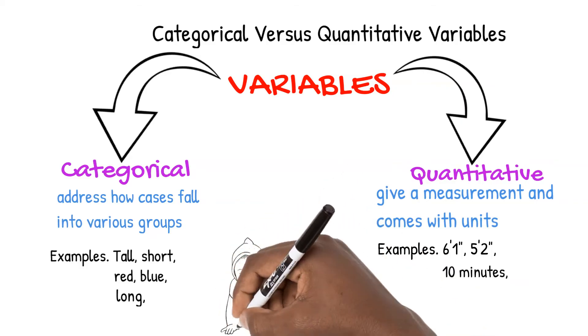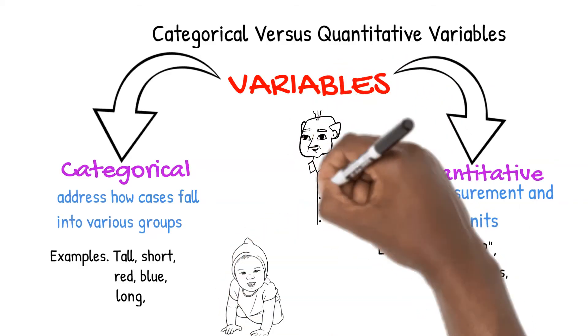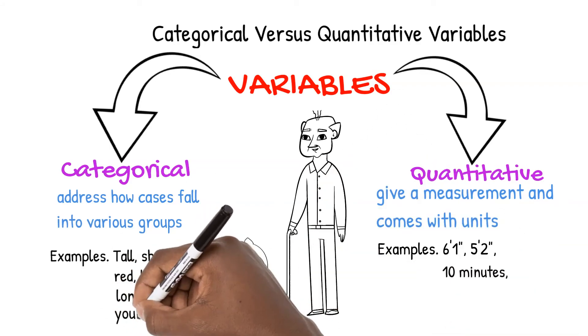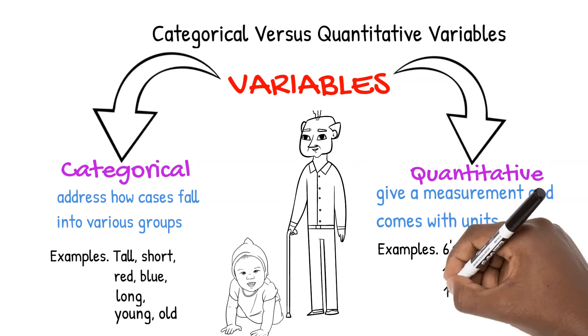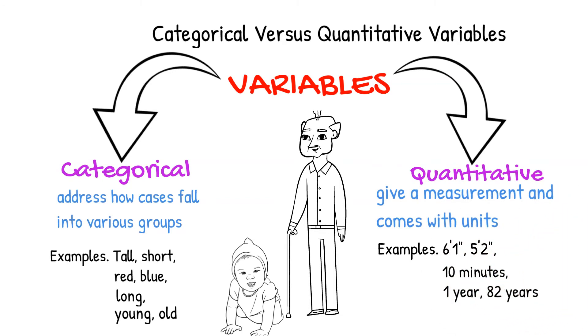Let's look at baby Mikey and his grandpa Erald. Mikey is young and Erald is old. These are both categorical data. But if instead I said that Mikey is one year old and Erald is 82 years old, since these are measurements with units, the data is quantitative.